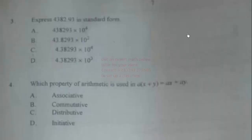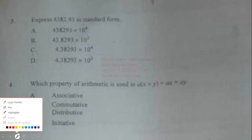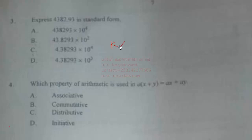Question 3: Express 4382.93 in standard form. To express a number in standard form means writing it as k × 10^n, where n is an integer and k is a number such that 1 ≤ k < 10.